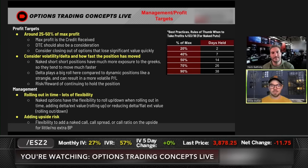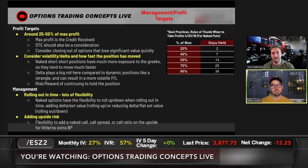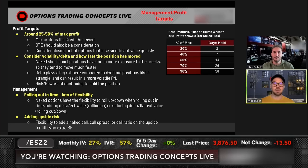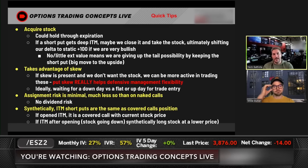The biggest difference compared to iron condors or strangles is the much lower days-held average to reach these percentage profits, because you're only taking risk on one side — only downside risk in the short put. Any time the market rips higher, your short puts are going to lose a ton of value. That's why when we expect the market to chop around — down 100 points, up 100 points — we tend to add more of these one-sided trades to capitalize on the potential reversal.